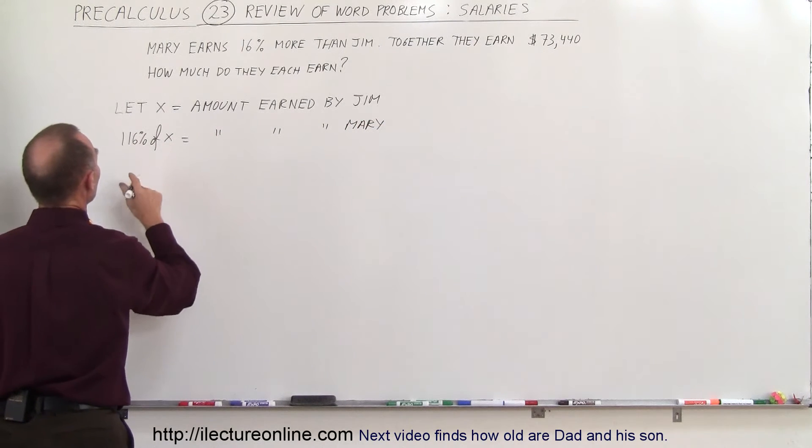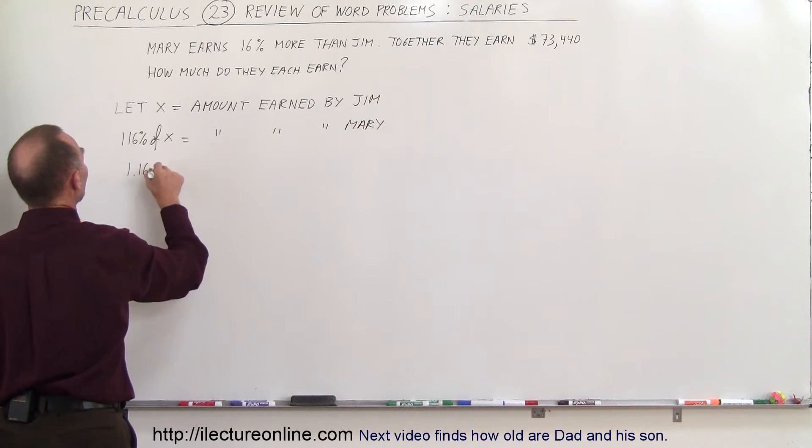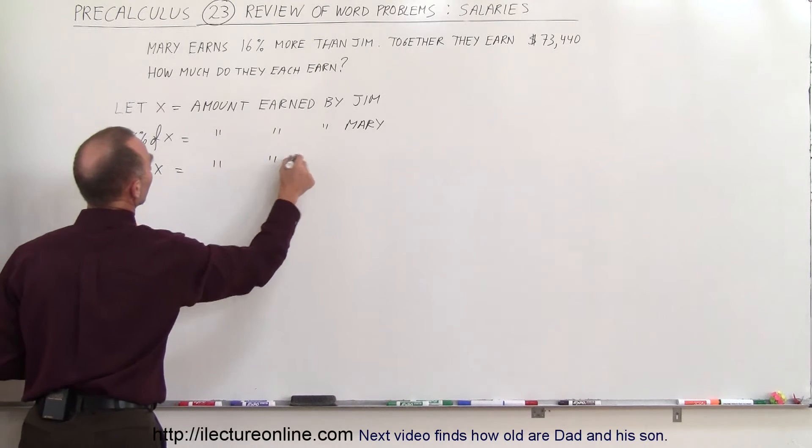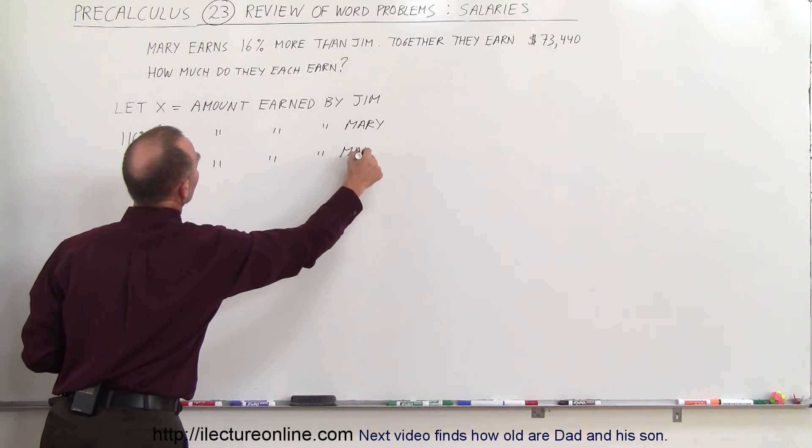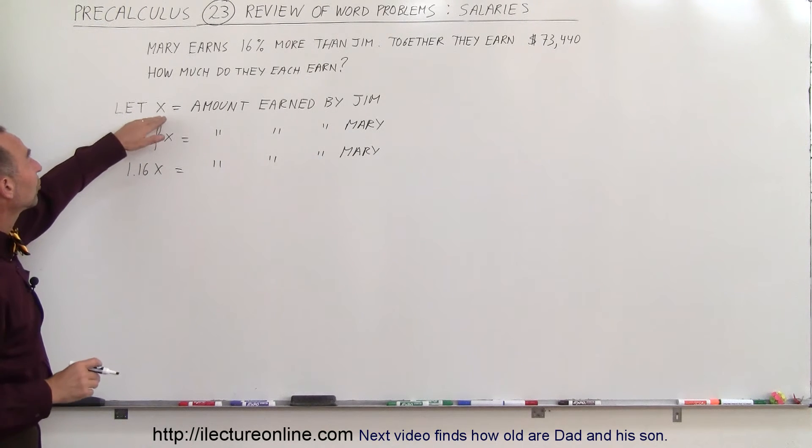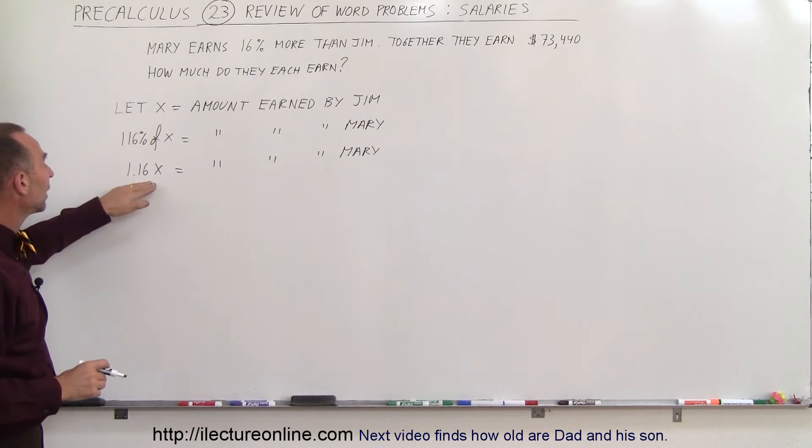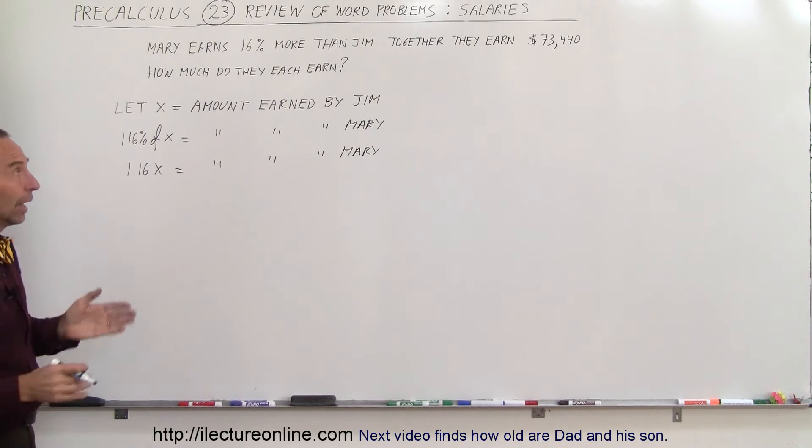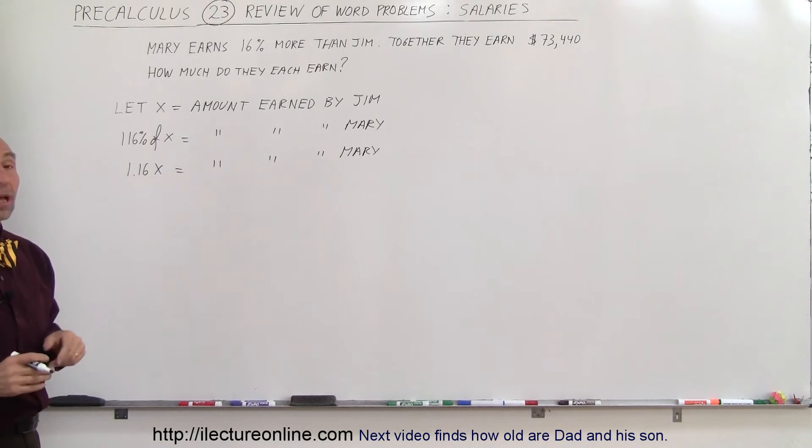So 116% of x, that means 1.16x equals the amount earned by Mary. That would be a better way to write it. So now we have the amount earned by Jim as x and 1.16x is the amount earned by Mary, and the total amount is $73,440.